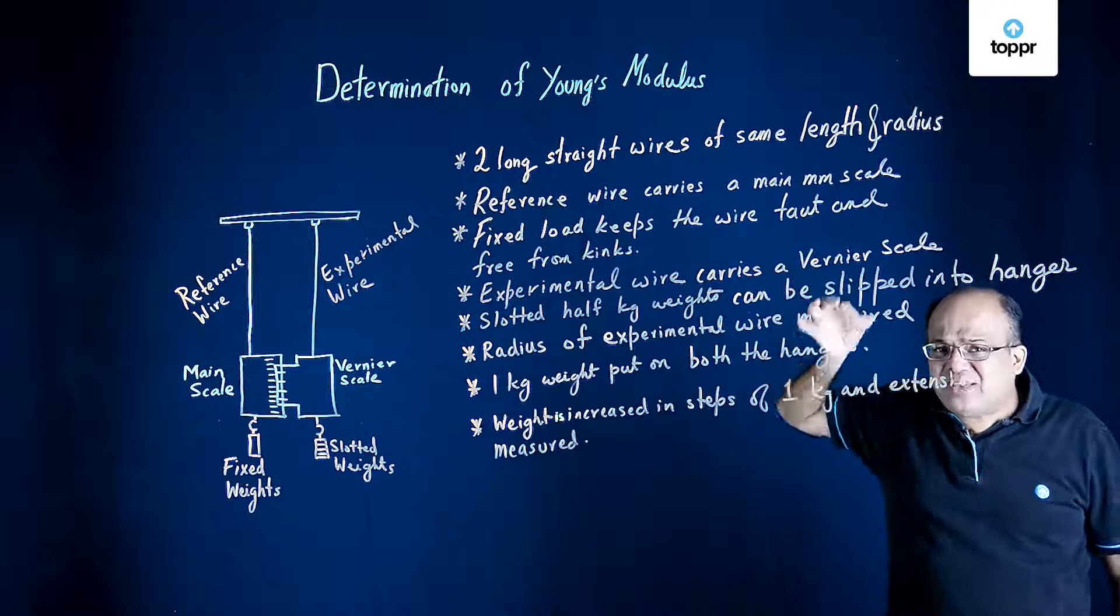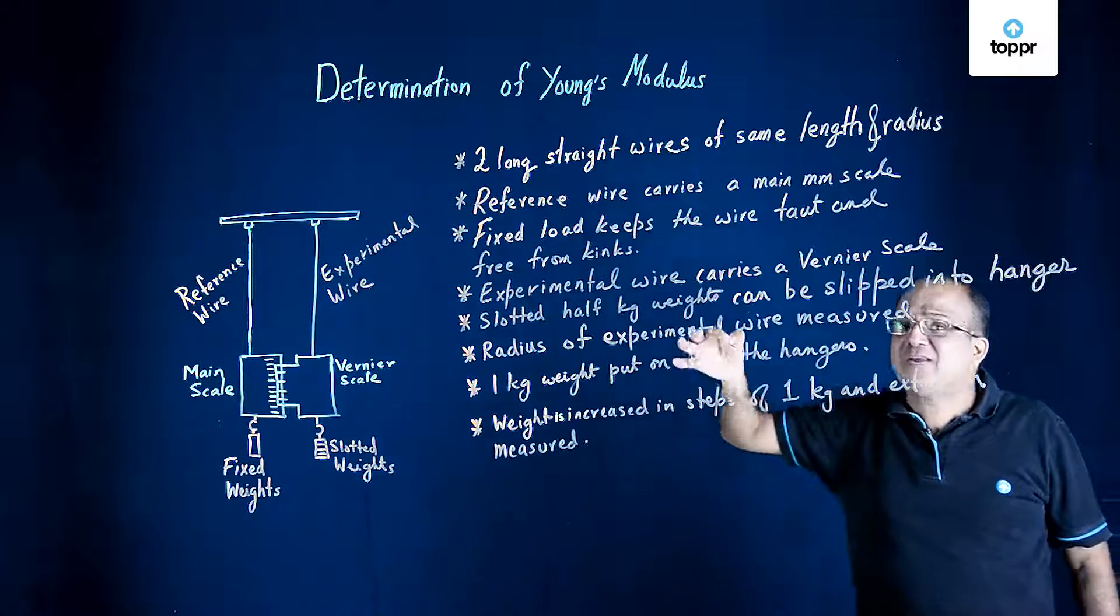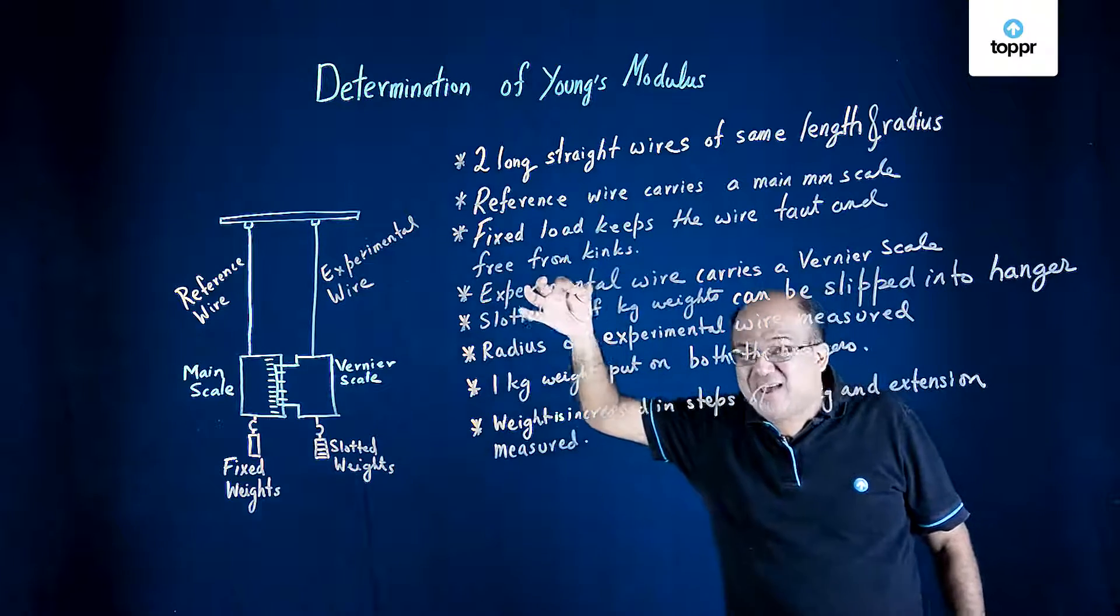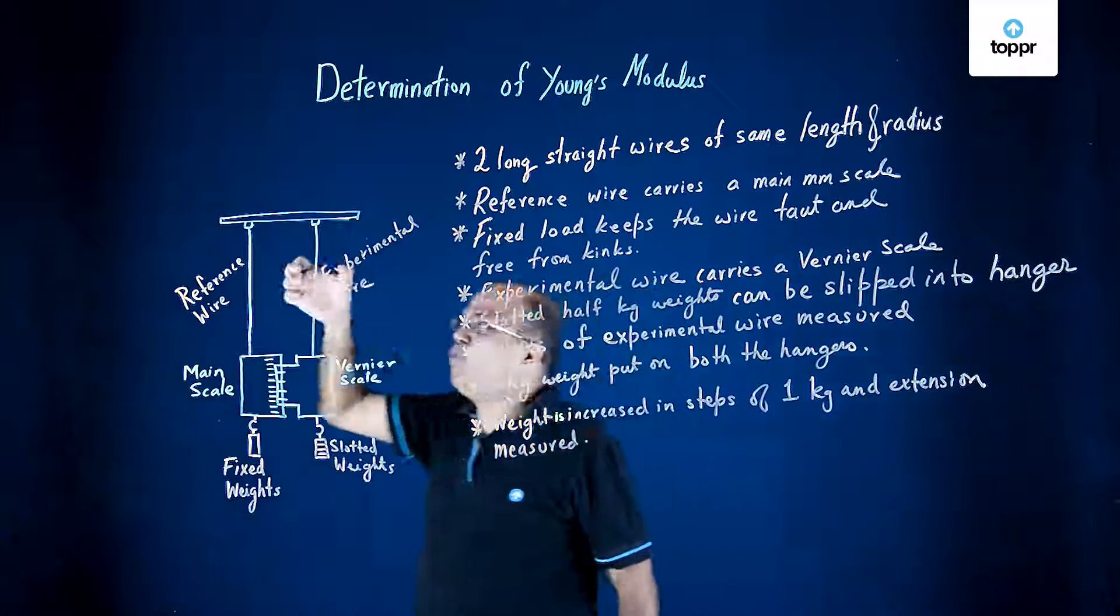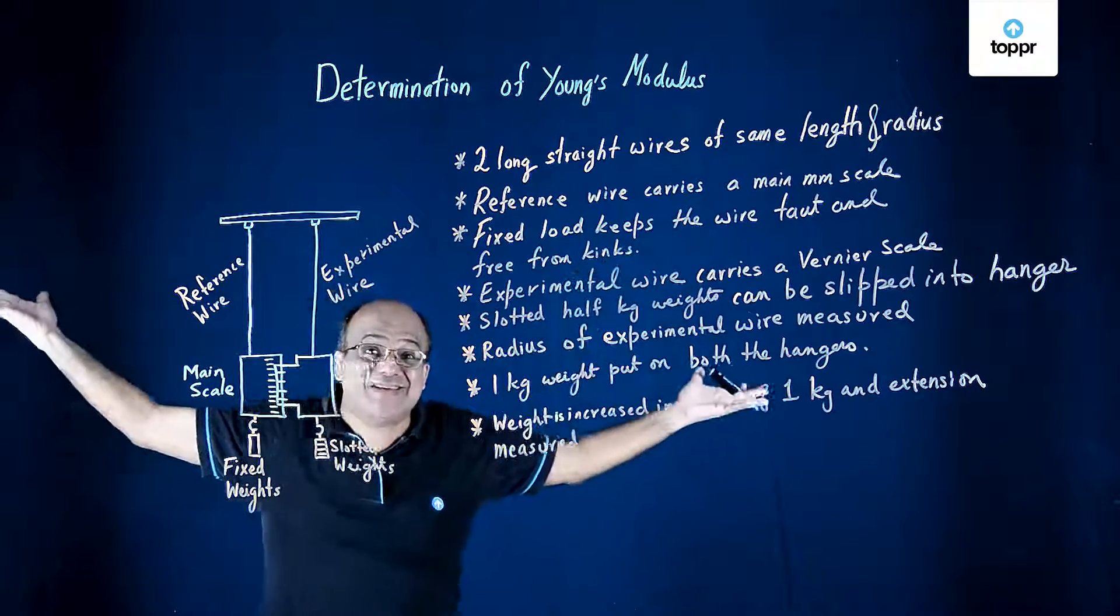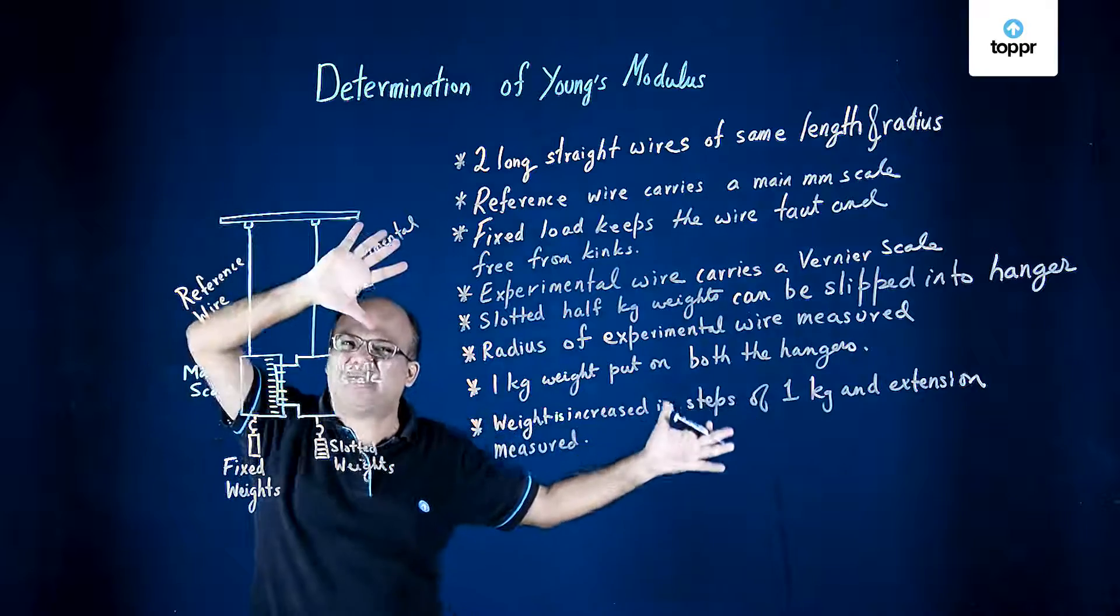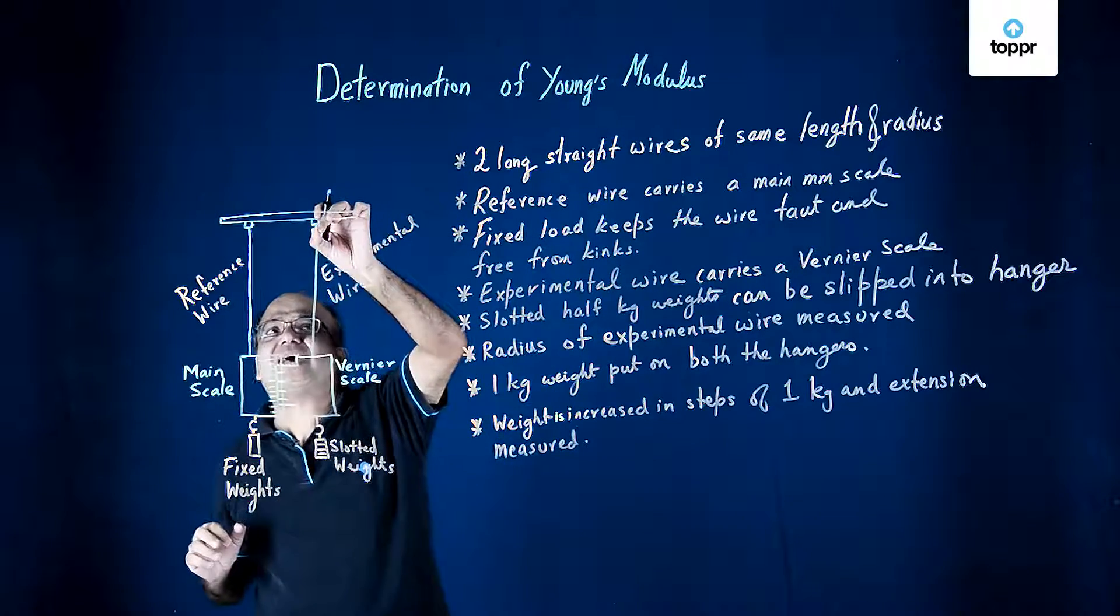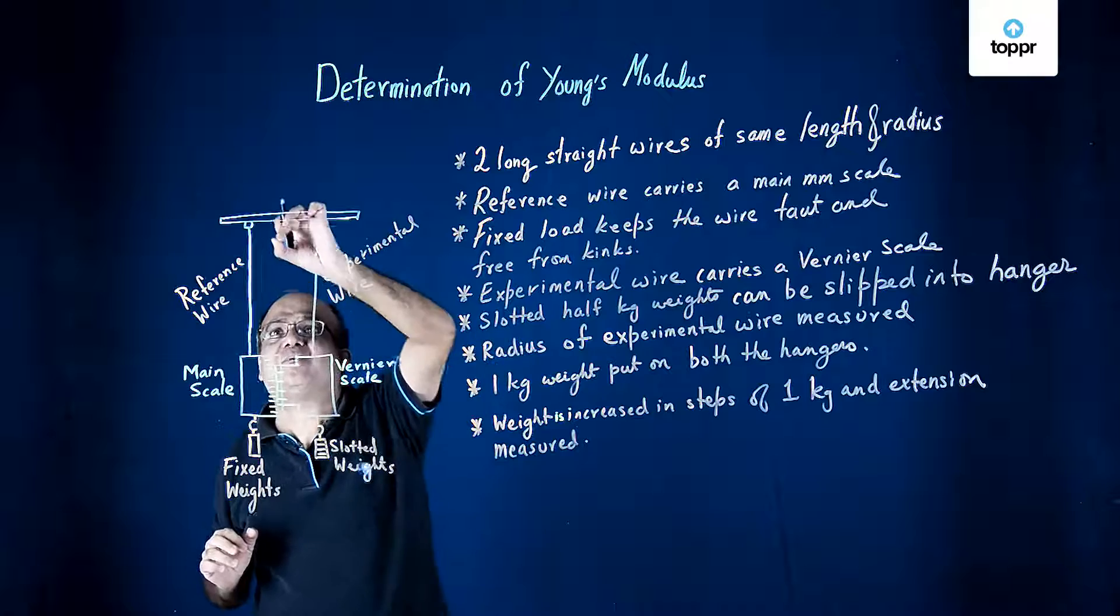To find out Young's modulus, you need some wire. Here we have got two wires of same length and same radius. Exactly the same two wires, and these wires hang from a fixed support.